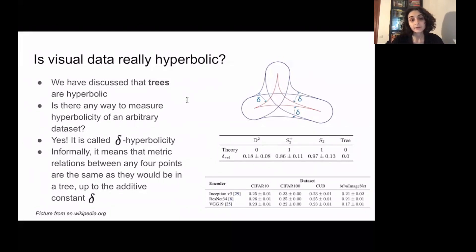We have measured this delta value for visual data and we have considered four visual datasets and extracted the features using three different encoders. In all cases we can see that the calculated delta value is closer to zero, so we could indeed benefit from embeddings to hyperbolic spaces.